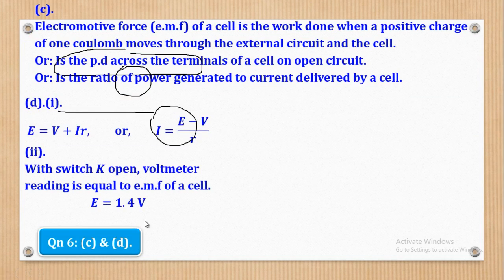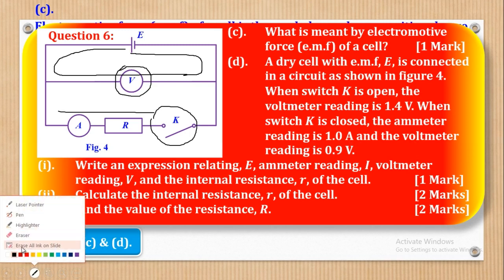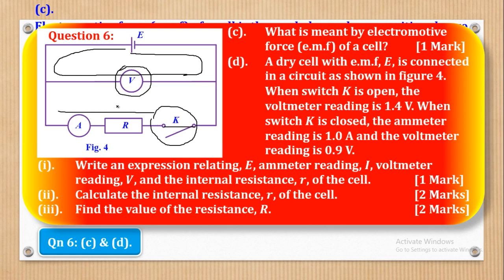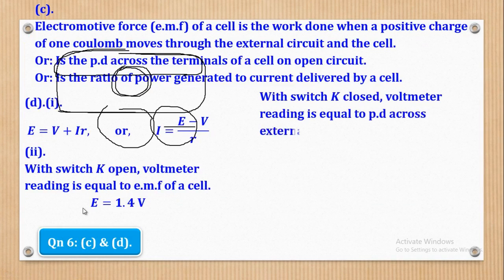So PD across an open circuit is equal to the EMF. Therefore she'll come and say that with switch K open, voltmeter reading is equal to the EMF of the cell. What does that mean? It means that EMF of the cell is equal to 1.4. Then they also told us that when switch K is closed, the ammeter reading is 1 ampere and the voltmeter reading is 0.9. So when this switch is closed, when you close this, it means that you can complete the circuit. Therefore the current will flow in this way, like that. And therefore the PD, the voltmeter reading here, will be equal to the PD across this external resistor.